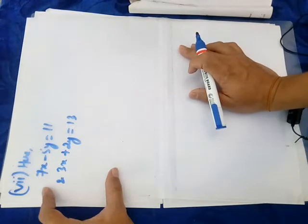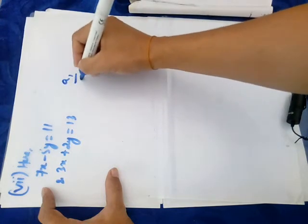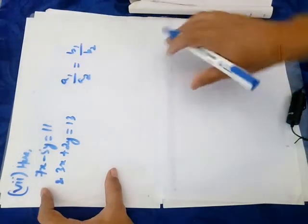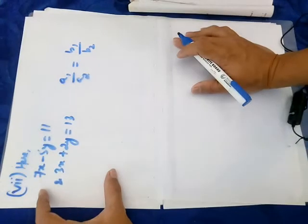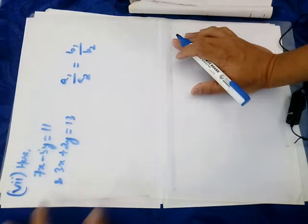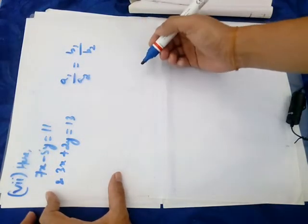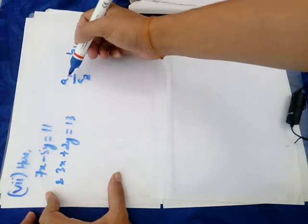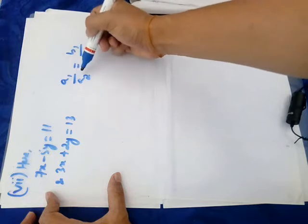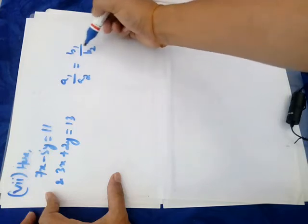I'm going to recall that we have a cross-exercise from the first exercise. Now let's look at the question: a1 by a2 and b1 by b2. A1 by a2 is the x-coefficient, so here we can find the x-coefficient. Now we can see the ratio of b1 by b2, which is the y-coefficient.